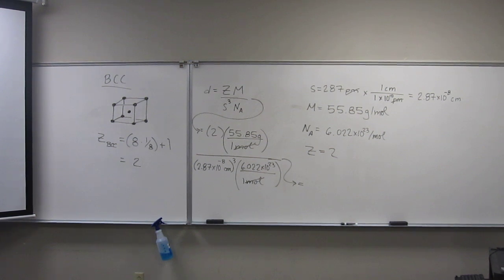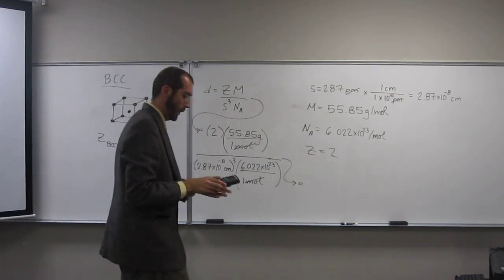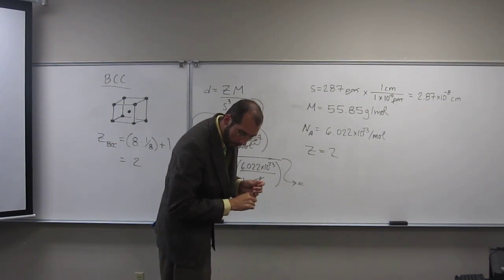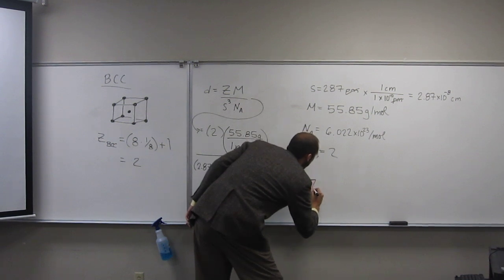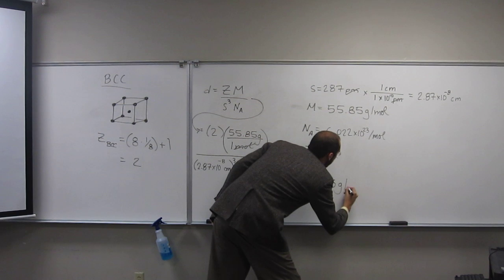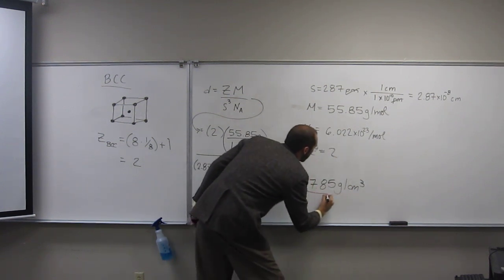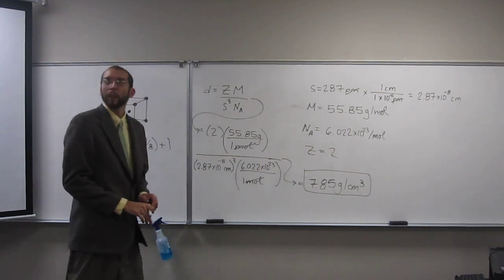Let's go. 2.87, Avogadro's number, 2 divided by that, times 55.85. Gives me a density of 7, so how many sig figs? Three. 7.85 grams per cubic centimeter. Did everybody else get that?